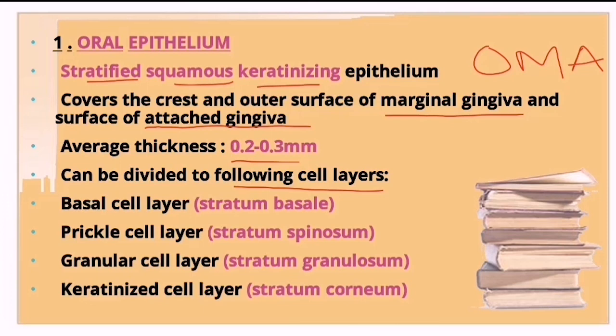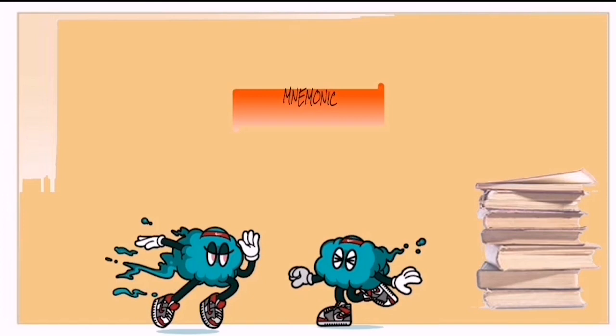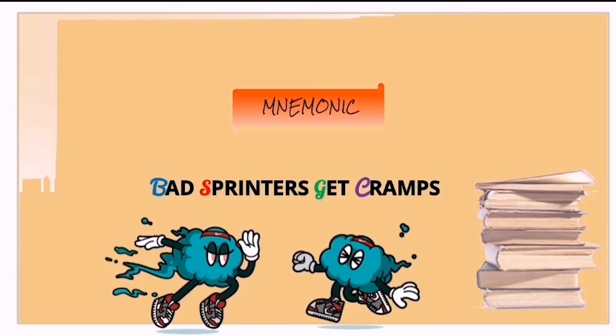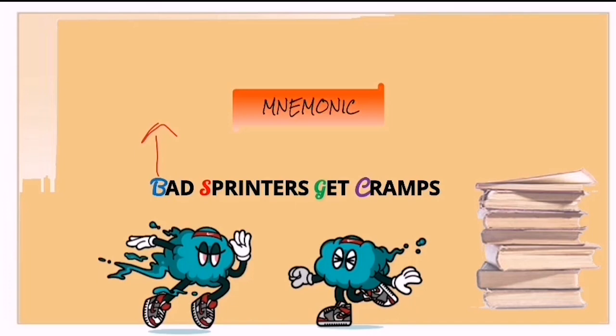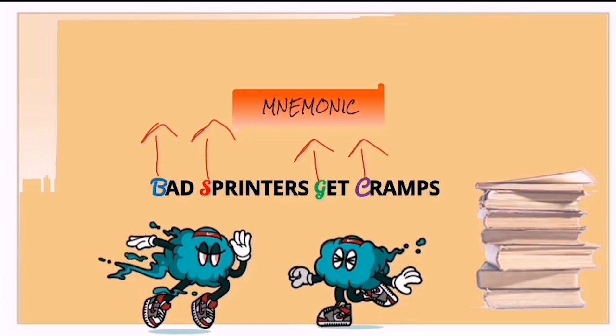The oral epithelium consists of four cell layers: stratum basale (basal cell layer), stratum spinosum (prickle cell layer), stratum granulosum (granular cell layer), and stratum corneum (keratinized cell layer). Use the mnemonic 'Bad Sprinters Get Cramps' to remember this order.